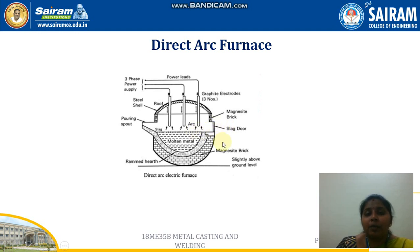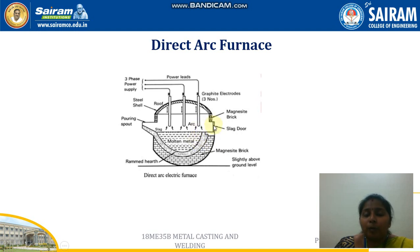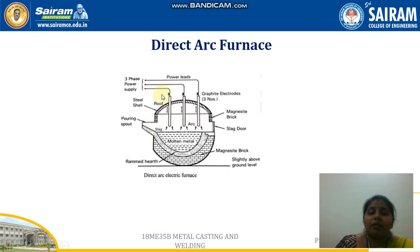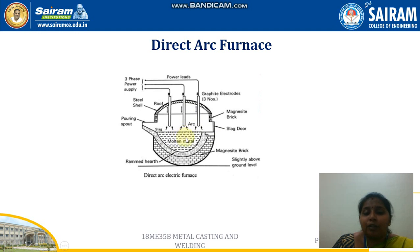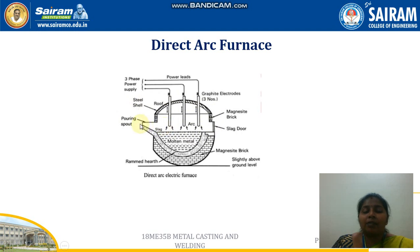Whenever the raw material is melted to a liquid state, a slag is formed — that is, a thin layer of waste material forms on top of the molten metal. A door is provided to remove the slag, and on the opposite side is a pouring spout through which the molten metal can be poured into a ladle. Once after supplying current to the electrodes, an arc is produced which melts the raw material. The slag is then removed and the furnace is tilted so that the molten metal comes out through the pouring spout.